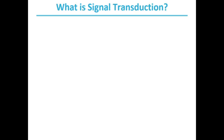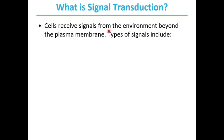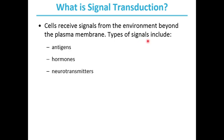What is signal transduction? The ability of cells to receive signals from the environment beyond the plasma membrane and act upon these signals is fundamental to cellular life. For example, bacterial cells constantly receive input from membrane proteins sampling the surrounding medium for pH, osmotic strength, and food availability. In eukaryotic cells, typical signals include antigens, hormones, or neurotransmitters.